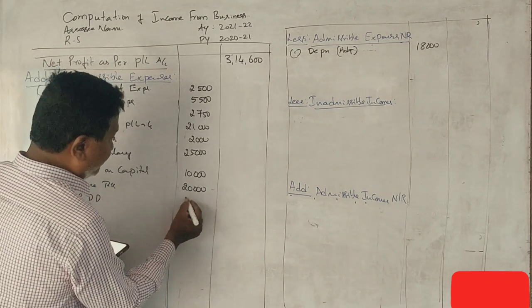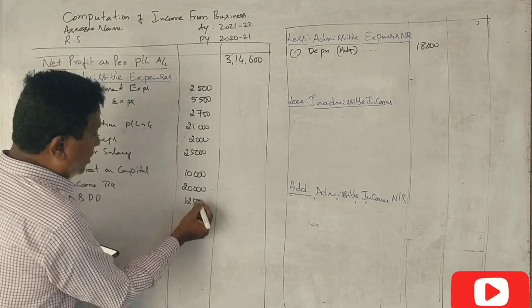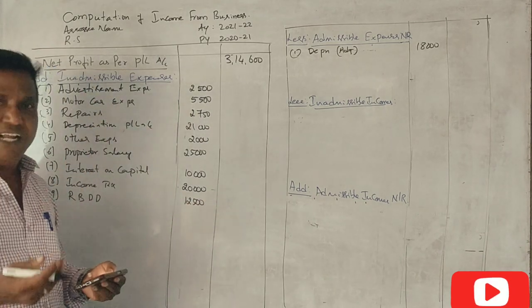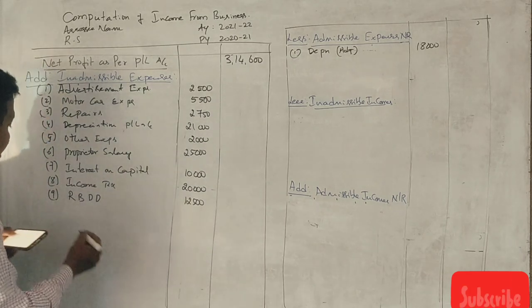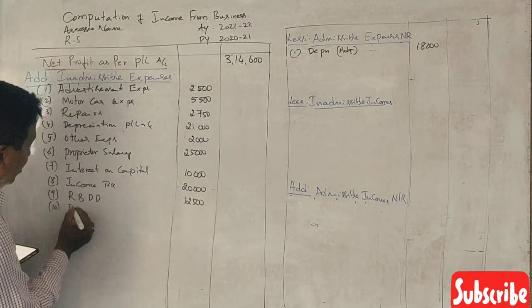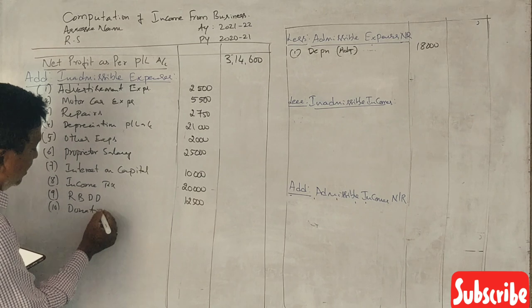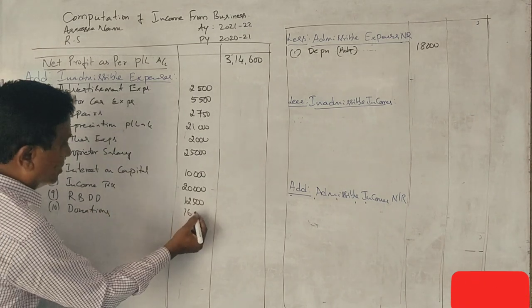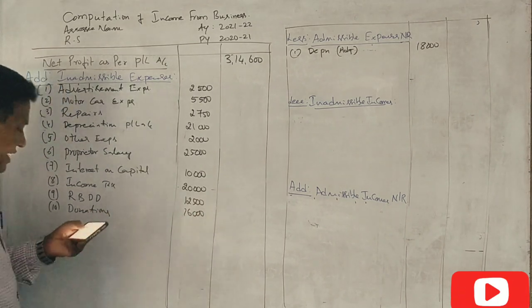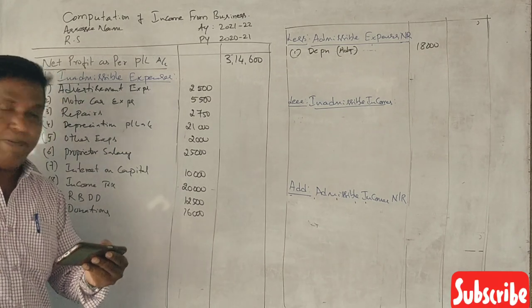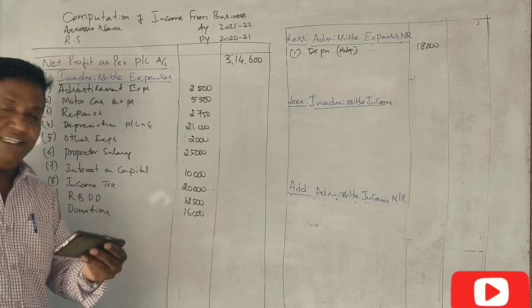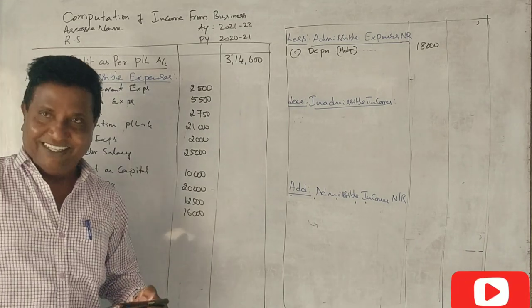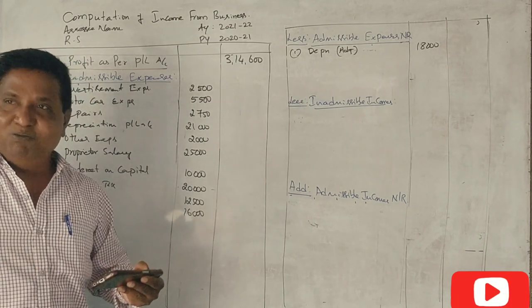Motor car expenses. Donation, it is also a very important point. Donation, 16,000. Sales tax is business. Repairs is business. Audit is business. Other expenses are business. Depreciation is business. All items are covered. Profit and loss account income side, credit side is income side.